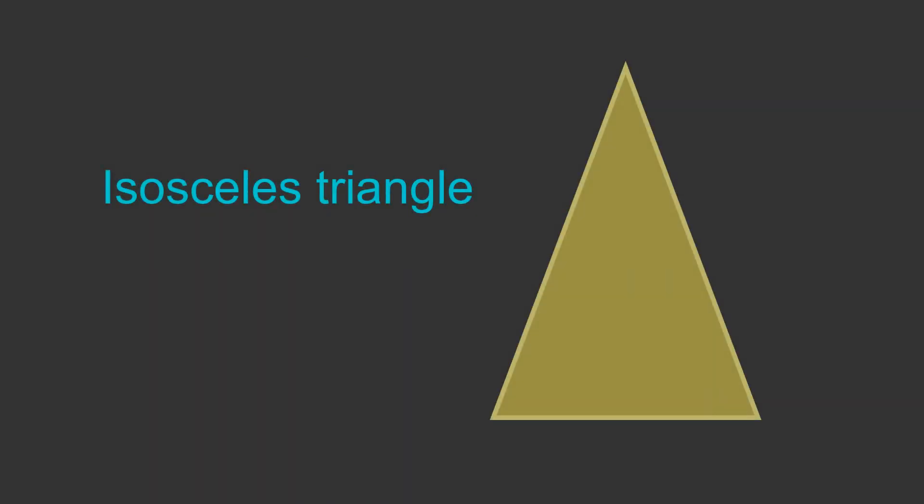Two radii of a circle form an isosceles triangle. An isosceles triangle is a triangle where two of the sides have equal length, like this.